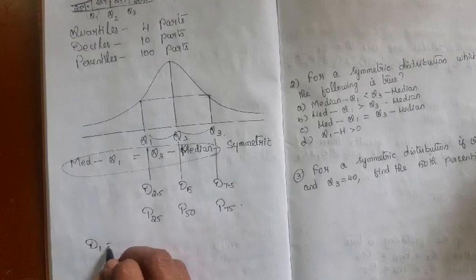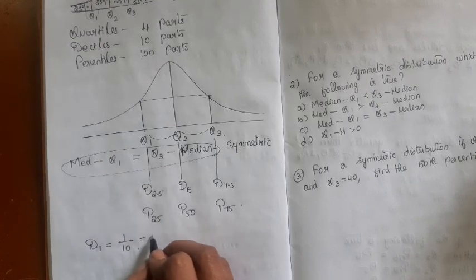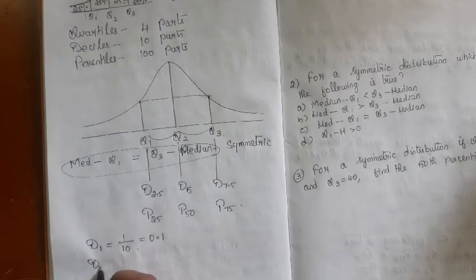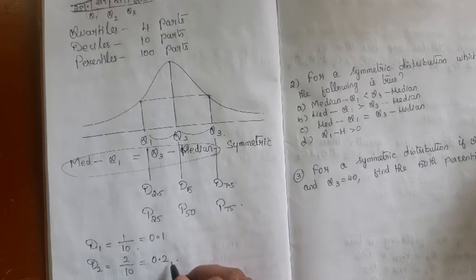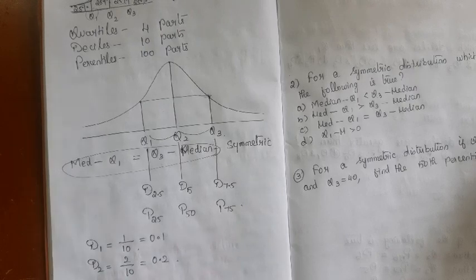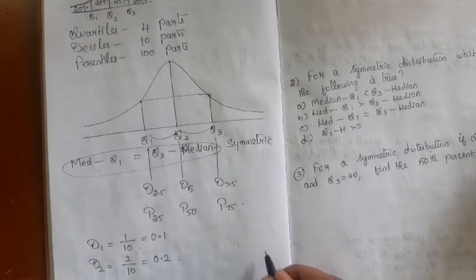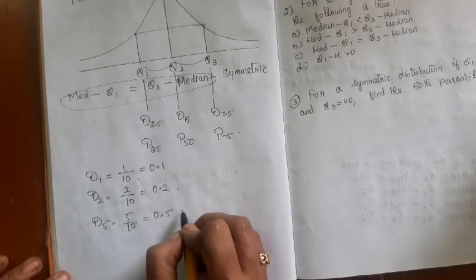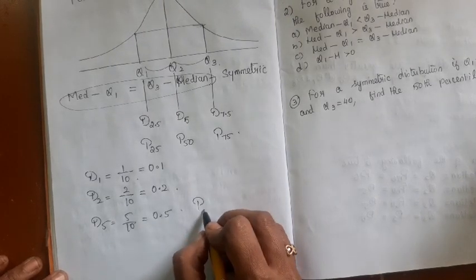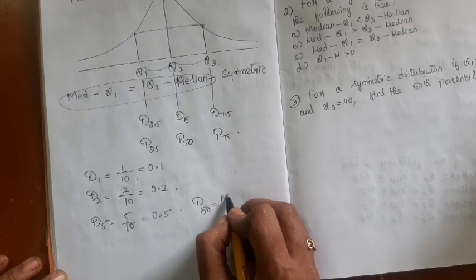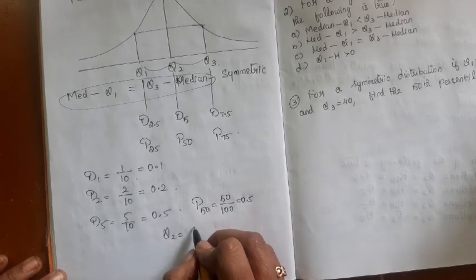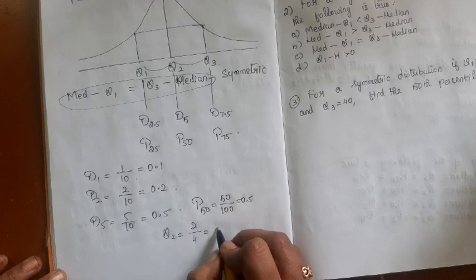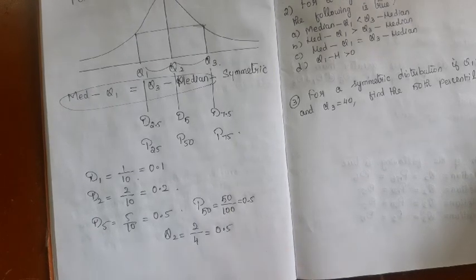D1 covers 1/10th of the distribution. D2 covers 2/10ths (0.2). D5 covers 5/10ths of the distribution. P50 also covers 0.5, and Q2 covers 2/4ths of the distribution — all equivalent to 0.5.